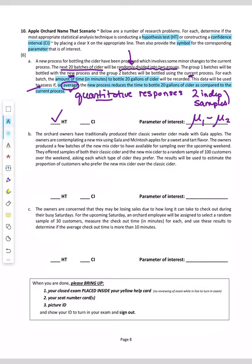Let's take a look at part B. They have traditionally produced their classic sweeter cider, and now they're contemplating a new mix. They produce a few batches of the new mix to have available for sampling over the upcoming weekend. They offer samples of both their classic and the new mix to a random sample of 100 customers. They're going to ask each customer which type they prefer.